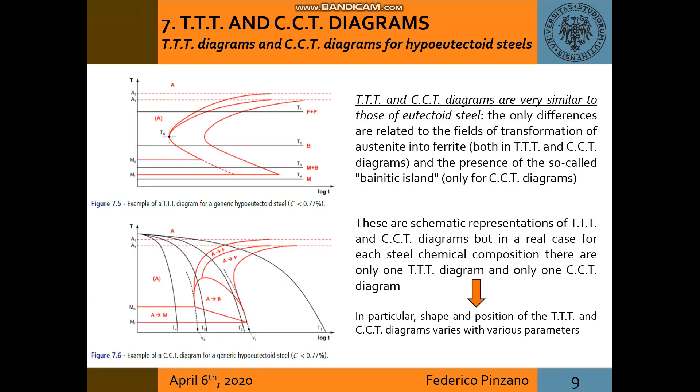So now we consider what happens for hypoeutectoid steel. TTT and CCT diagrams are very similar and the only differences are related to the fields of transformation of austenite into pearlite and the presence of the so-called bainitic island, the latter only in CCT diagrams. Note that in a real case for each steel chemical composition there are only one TTT diagram and only one CCT diagram.